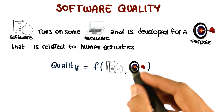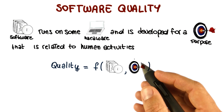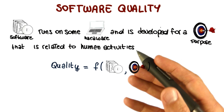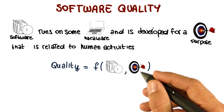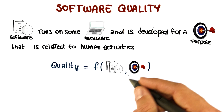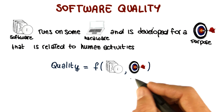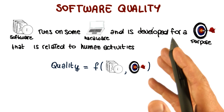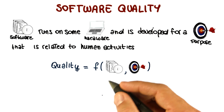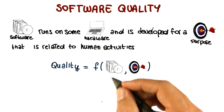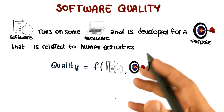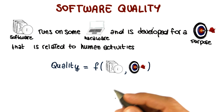A software system can be of low quality not only because it does not work well — for example, not only because it crashes. But just as importantly, software can also be of low quality because it does not fulfill its purpose, and this happens quite often. It is unfortunately not rare for software producers to have an inadequate understanding, or even a complete misunderstanding, of the purpose of the software — of what the users want to do and will do with it.